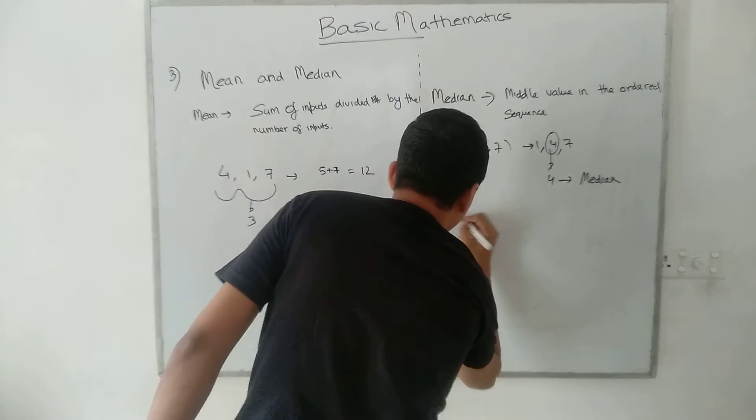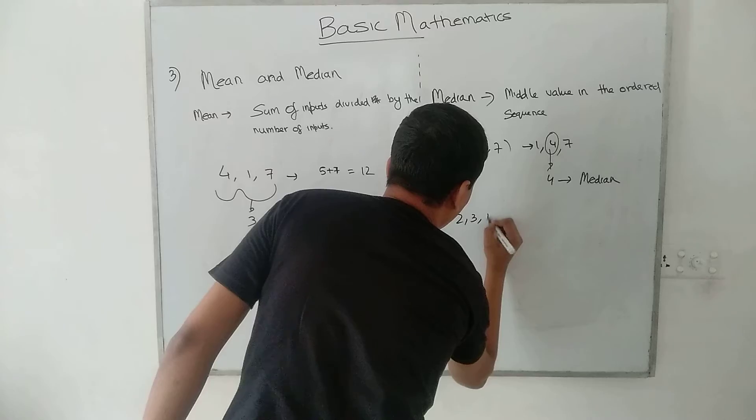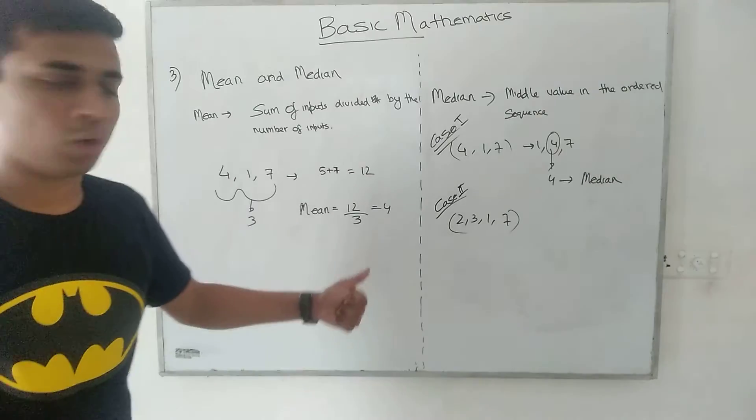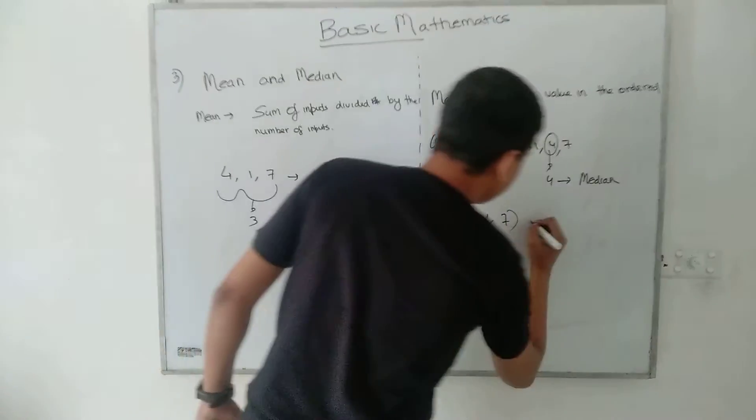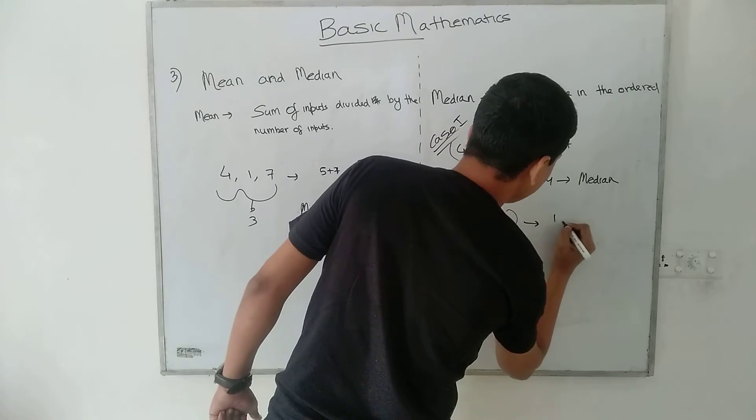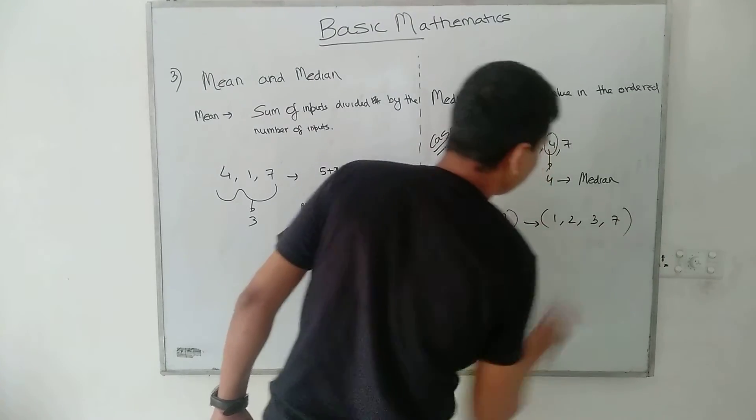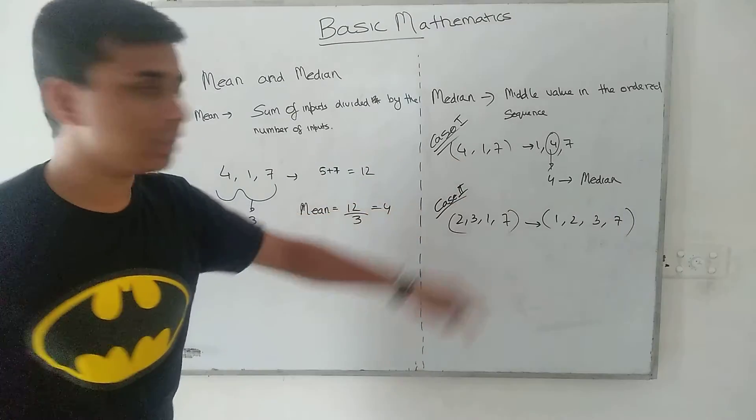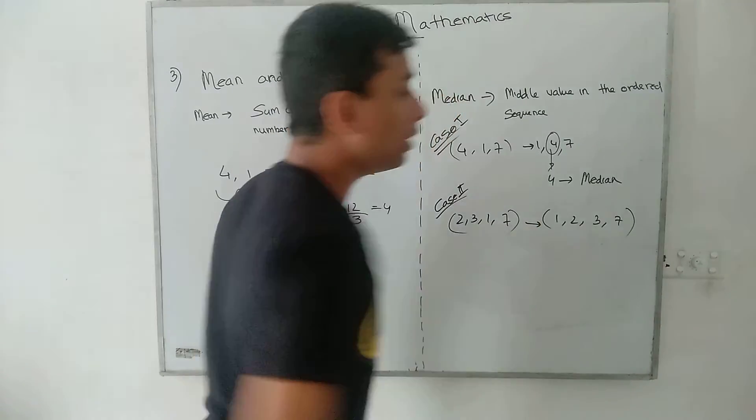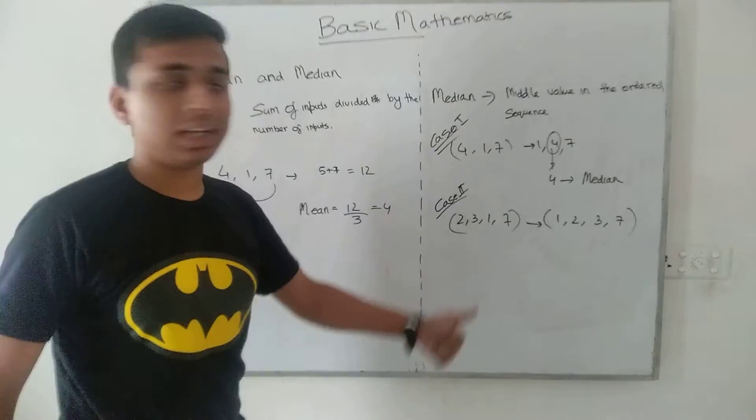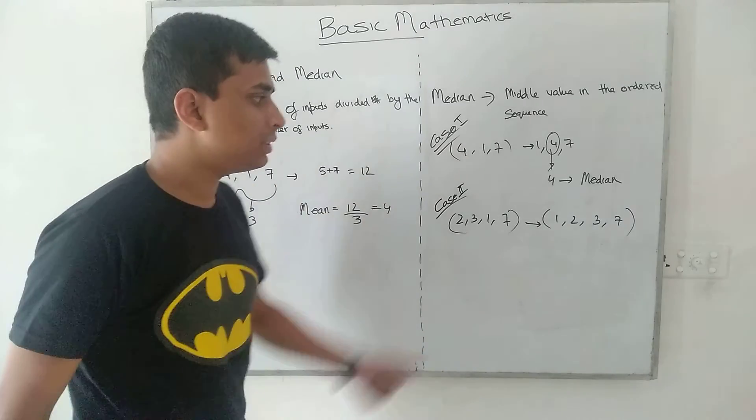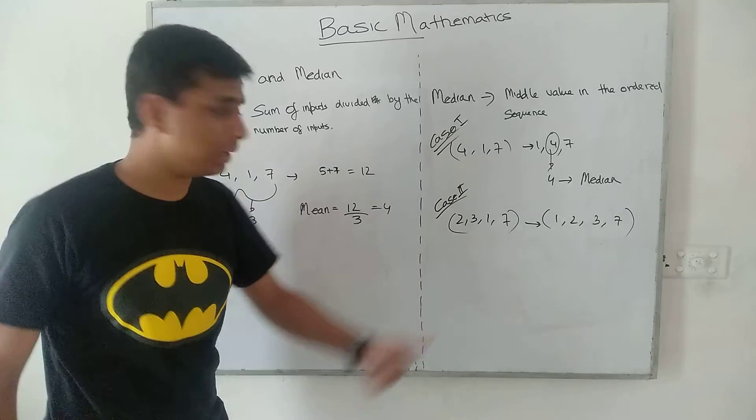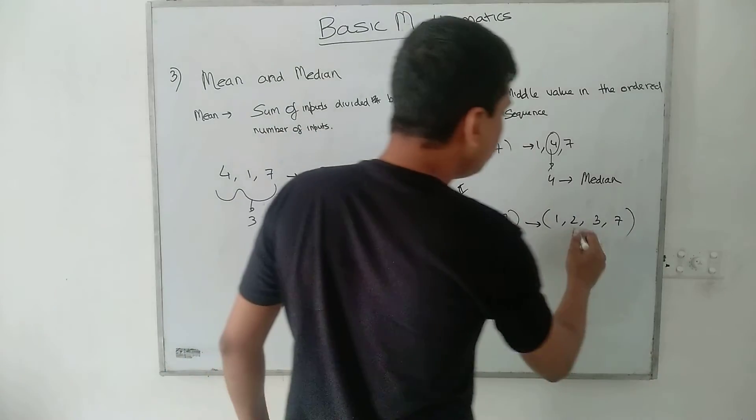That is case 2, we are taking an even length sequence: 2, 3, 1, 7. As you can see, it is also not ordered. On ordering this, we would be getting 1, 2, 3, 7 in ascending order. As you can see, in the previous case 4 was the middle element, but in this case we are not getting any such value which is present in the middle.